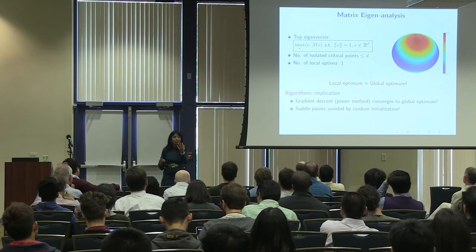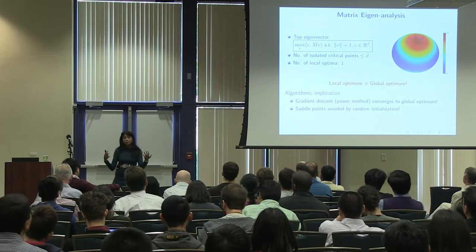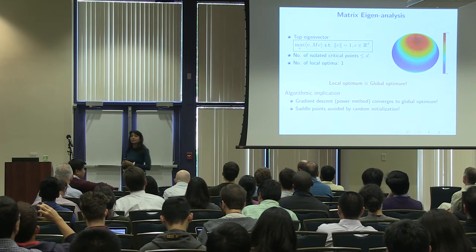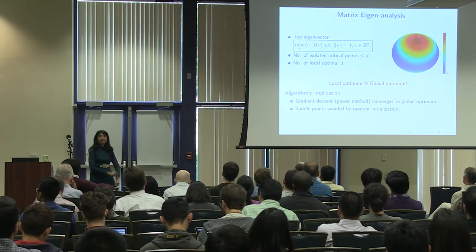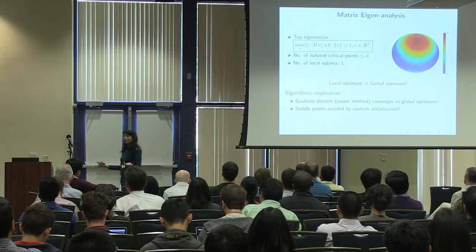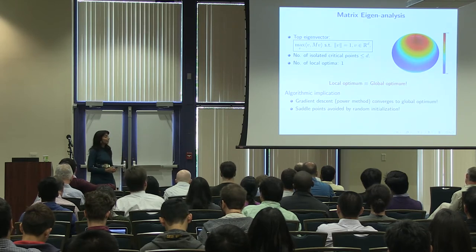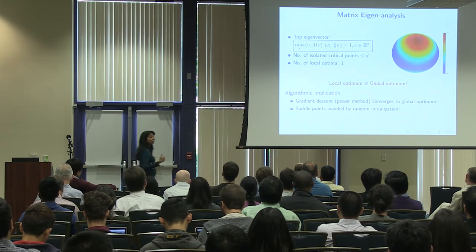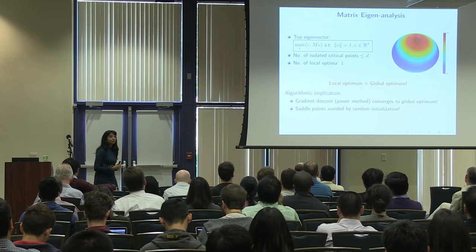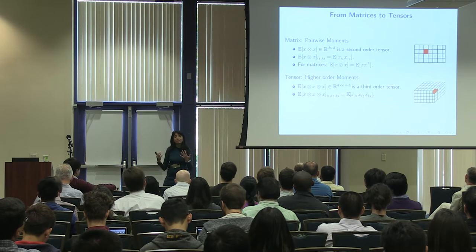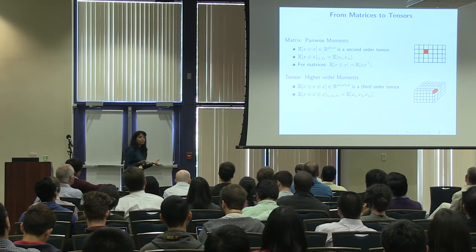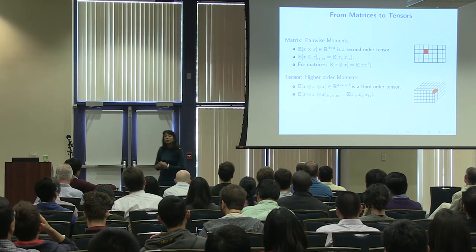The power method takes the matrix, multiplies it with a random vector, normalizes, and repeats — provably converging to the top eigenvector. For matrices, despite being a non-convex problem, you can analyze the optimization landscape, characterize the critical points and local optima. Can we take this further? Are there other non-convex problems for which we can come up with guaranteed analysis? What I've been looking at is going from matrices to tensors, which are natural generalizations.